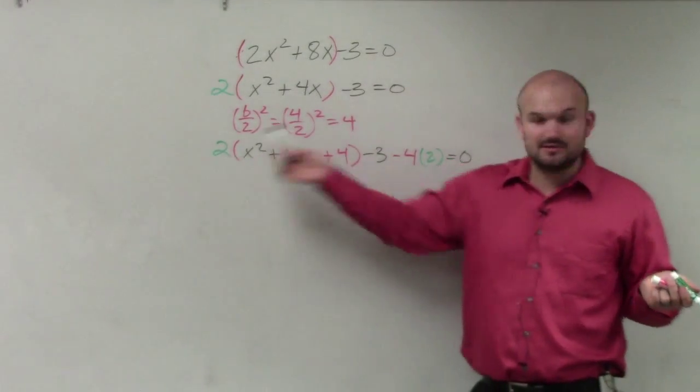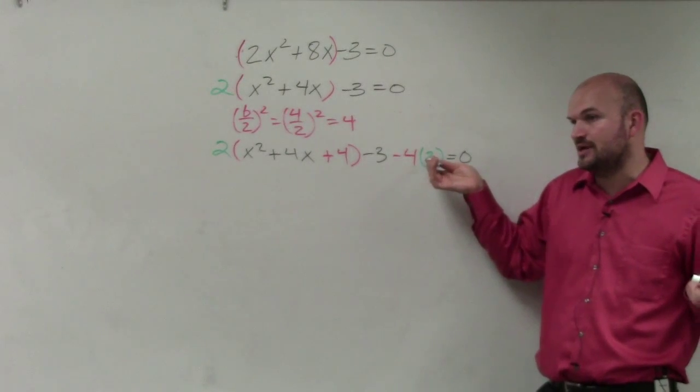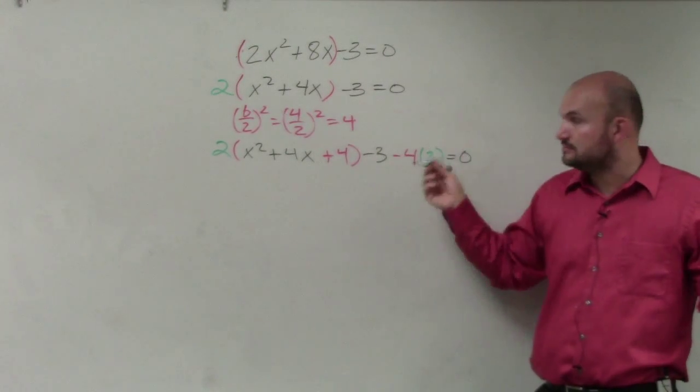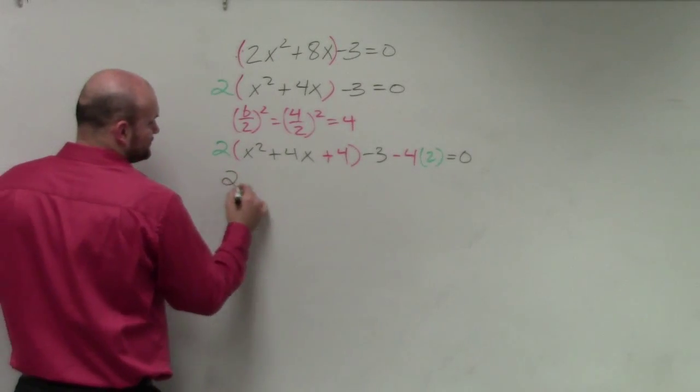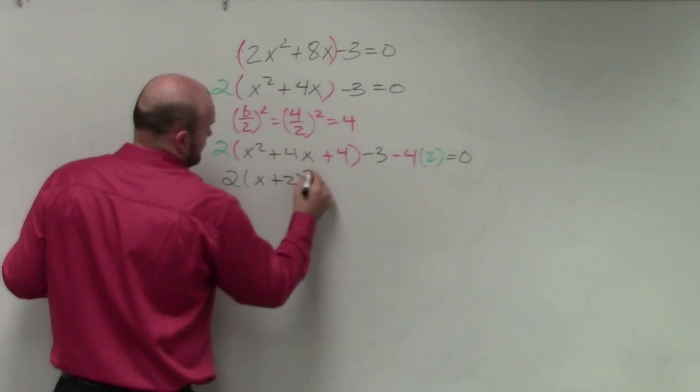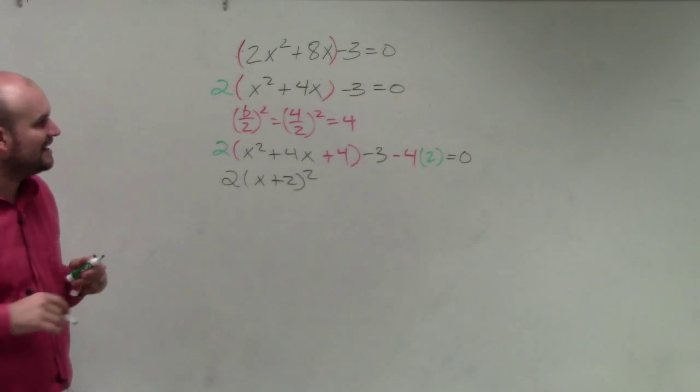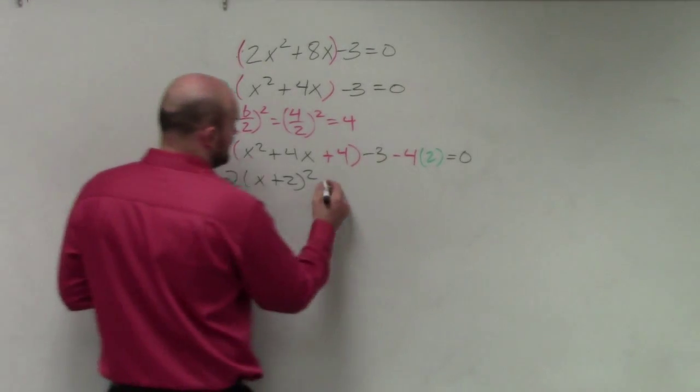So whatever you factor out, you just got to remember, you're going to be multiplying that by your other number that you added. So therefore, this factors down to a perfect square trinomial. 4 times 2 is negative 8, minus 3 is a negative 11.